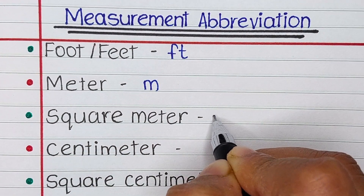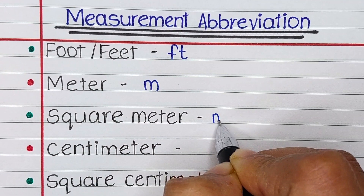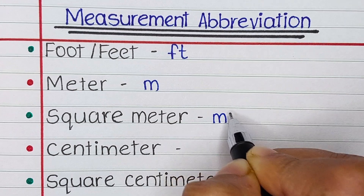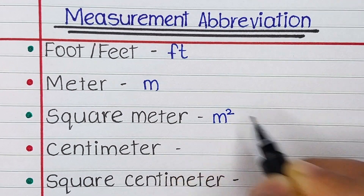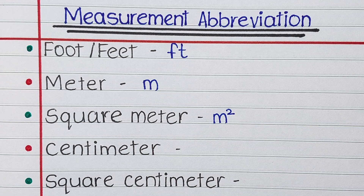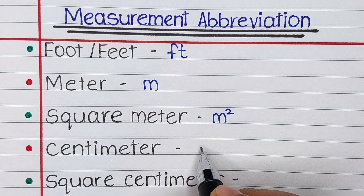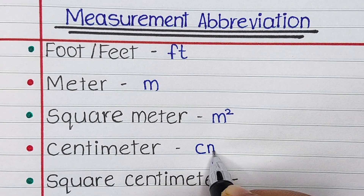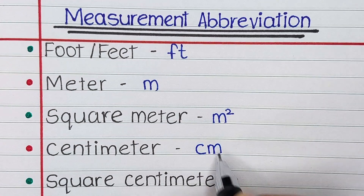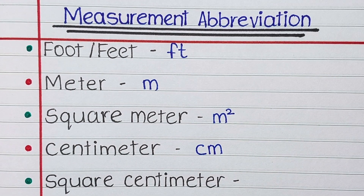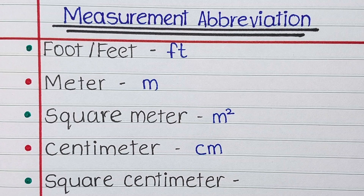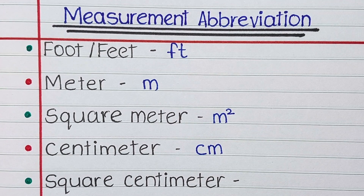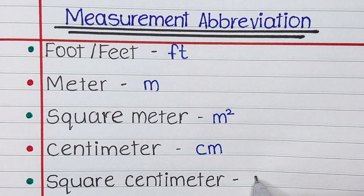First one is foot or feet. We write it as small letter f and small letter t. Next is meter. We abbreviate it as small letter m. Next is square meter. We abbreviate it as small letter m to the power 2.